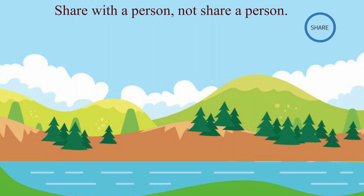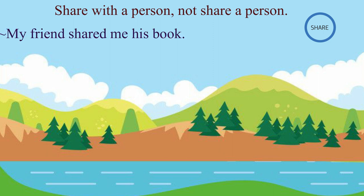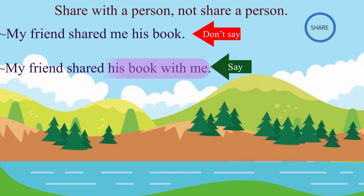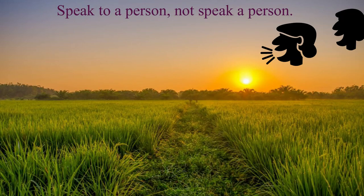Our next sentence is: 'My friend shared me his book.' In this sentence, the words 'shared' and 'me' indicate that it's you who gets shared, so it's a wrong expression. The correct form is: 'My friend shared his book with me.' We always share something with someone, so we use 'with' after the verb 'share.'